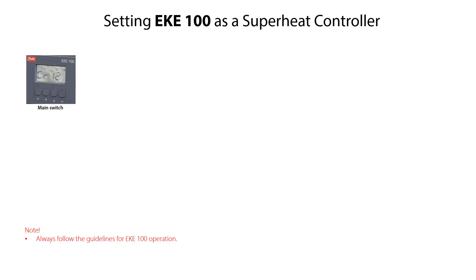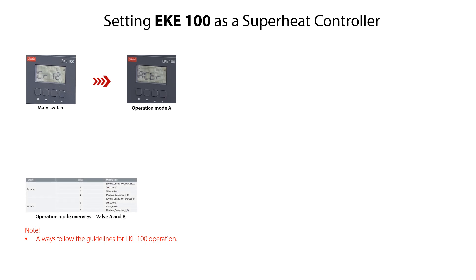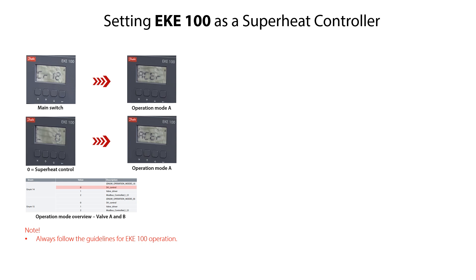The first step in the EKE100 configuration is to set it as a superheat controller. For valve A, from the main switch CR12 mode, press the arrow down key to access the operation mode A, specified as ACTR. Press the enter key to access the available operating modes, then press the arrow up or down keys to get the value corresponding to superheat control. The value should be set as 0 for superheat control, specified as HA control. Press the enter key to confirm the value and return to the ACTR mode.